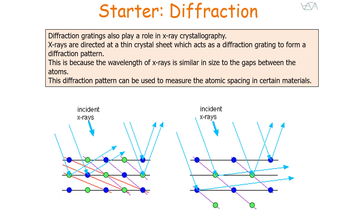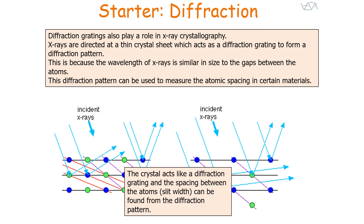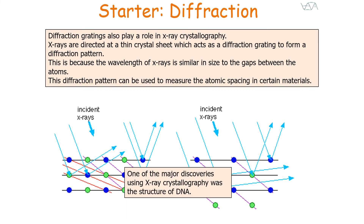Diffraction gratings also play a role in X-ray crystallography. X-rays are directed at a thin crystal sheet, which acts as its own diffraction grating, because the wavelengths of the X-rays are similar in size to the gaps between the atoms. The X-rays diffract as they pass through the atomic gaps, and the diffraction pattern can be used to measure the atomic spacing in certain materials. By measuring theta, lambda, and knowing N, you can work out D. One of the major discoveries using X-ray crystallography was working out the structure of DNA.